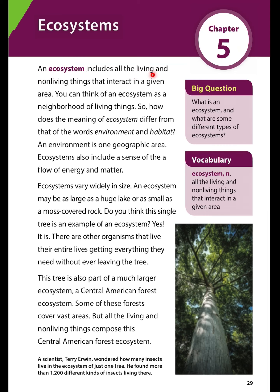An ecosystem includes all the living and non-living things that interact in a given area. You can think of an ecosystem as a neighborhood of living things. So how does the meaning of ecosystem differ from the words environment and habitat? An environment is one geographic area. Ecosystems also include a sense of the flow of energy and matter.